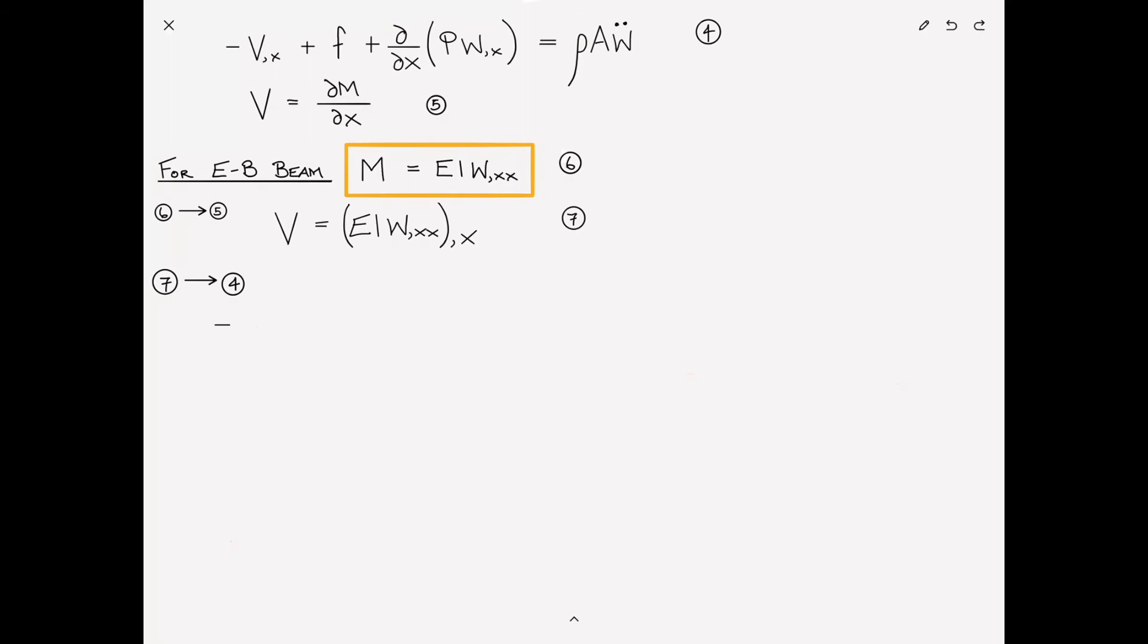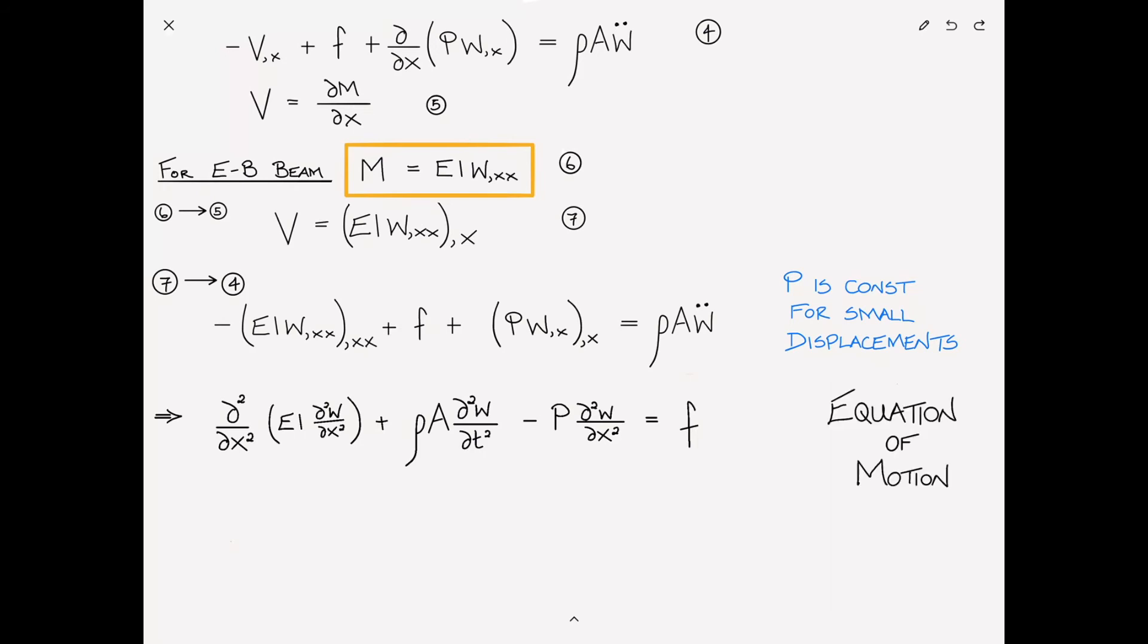We need to substitute equation seven into equation four. That gives us negative EI W comma XXXX plus F plus P W comma XX equals rho A W double dot. Now, it can easily be shown that for the small displacement theory, P is constant. This has to do with the fact that there is no acceleration in the axial direction. As a result, we can take P outside of the derivative and rewrite this in longhand as d squared by dx squared of EI d squared W dx squared plus rho A d squared W dt squared minus P d squared W dx squared equals F. This is the equation of motion for the axially loaded beam.